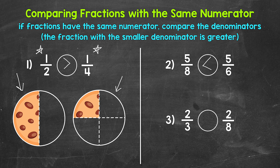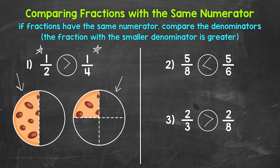Lastly, let's move on to number three, where we have two thirds and two eighths. Is two thirds greater than, less than, or equal to two eighths? We have the same numerator — two — so we can compare the denominators. The fraction with the smaller denominator is greater. Three is less than eight, so two thirds is greater. A whole divided into three equal parts has bigger parts than a whole divided into eight equal parts, so two thirds represents more of the whole than two eighths. We read our comparison as two thirds is greater than two eighths.